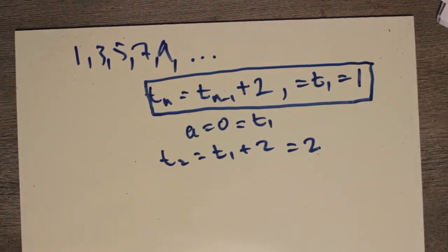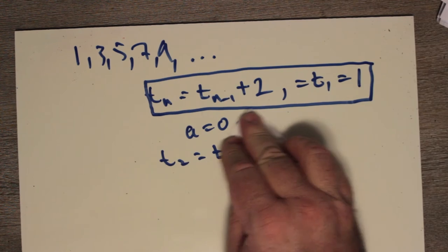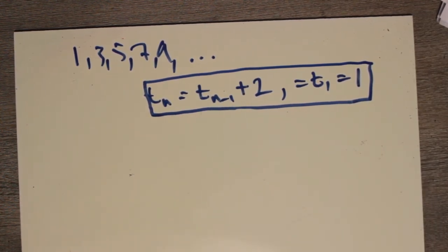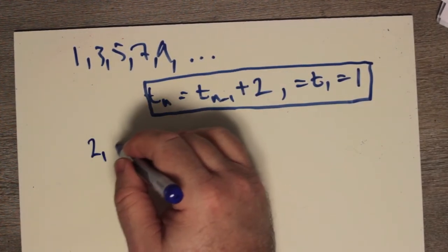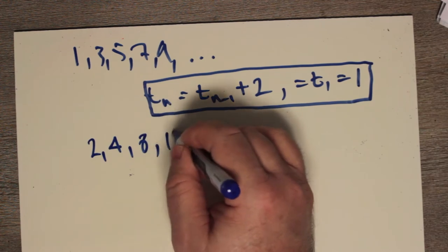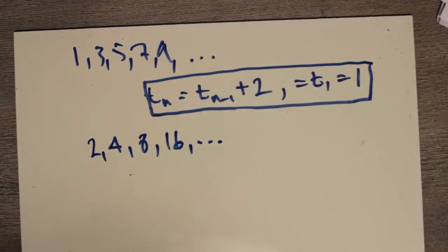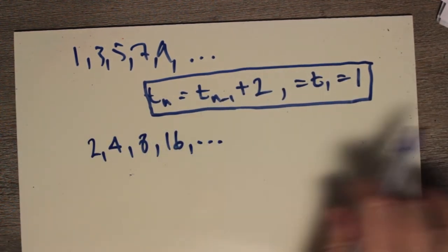Now, with these two pieces of information, we now have an unambiguous definition for what kind of sequence this is or what the exact numbers are in the sequence. Okay, the same is true for a geometric sequence. So if I have 2, 4, 8, and 16, as you can see, these are all powers of 2.